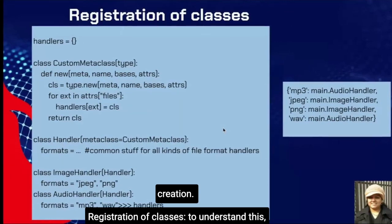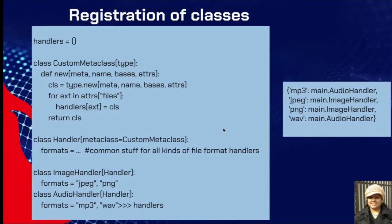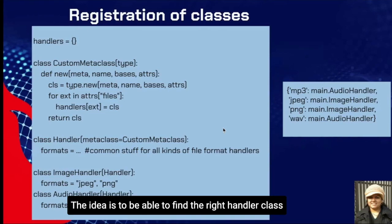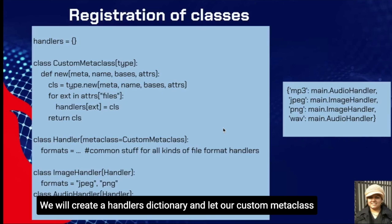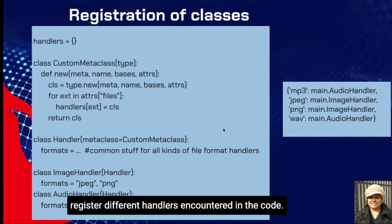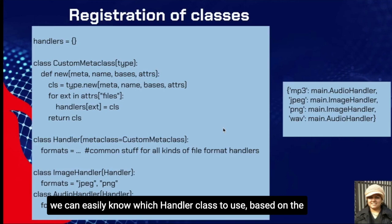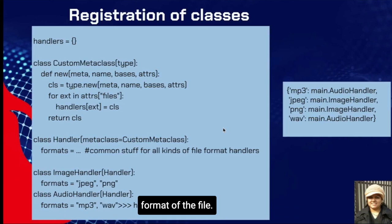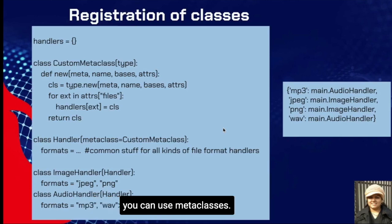Registration of classes — let's take an example of multiple file handlers at a server. The idea is to find the right handler class quickly based on file format. We create a handlers dictionary and let our custom metaclass register different handlers encountered in the code. Based on the inheritance hierarchy of classes, we can easily know which handler class to use based on the file format. Whenever you need to maintain a data structure storing characteristics of classes, you can use metaclasses.